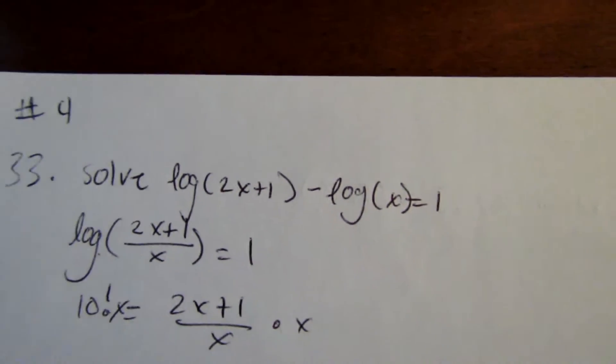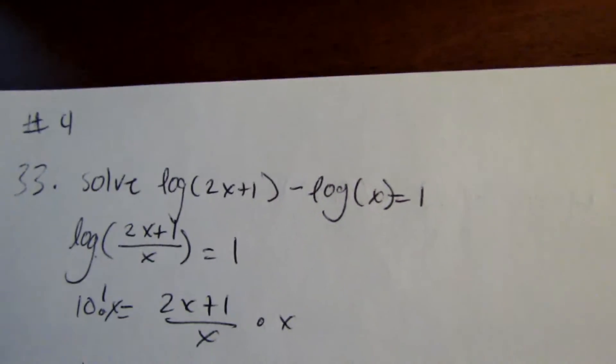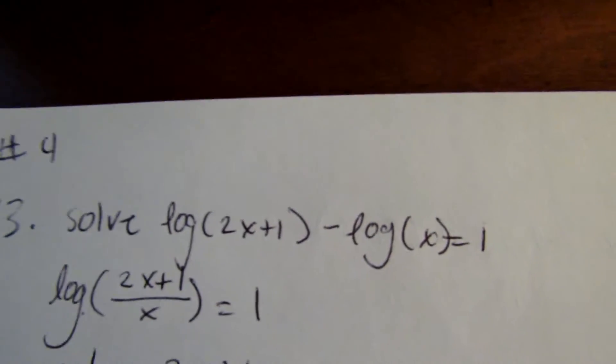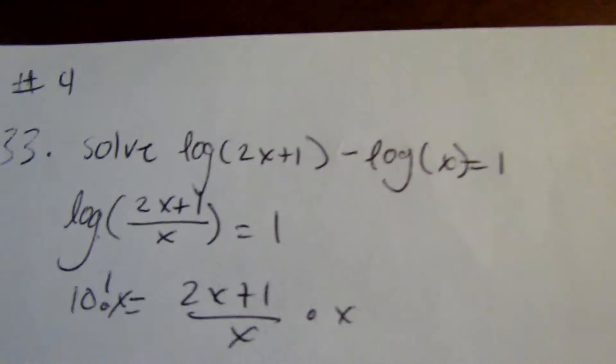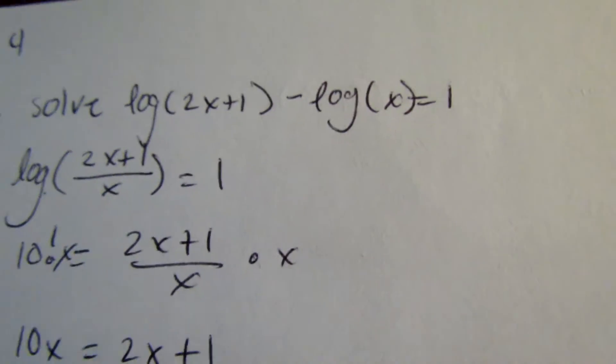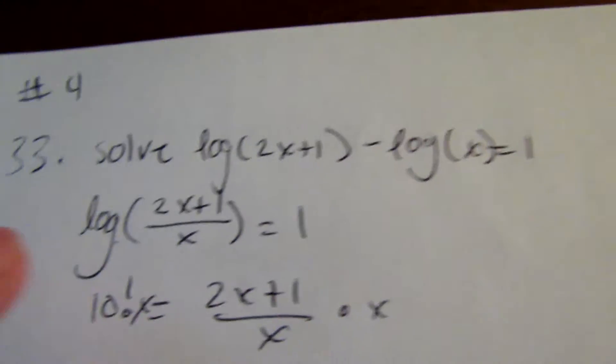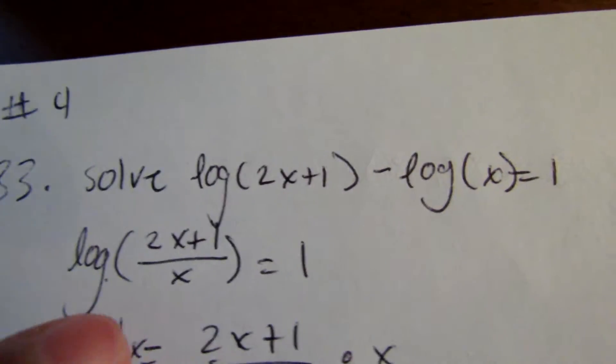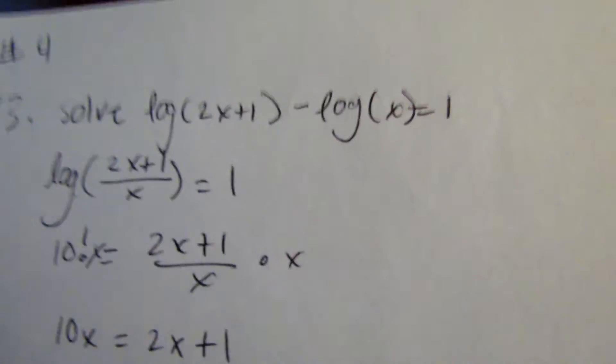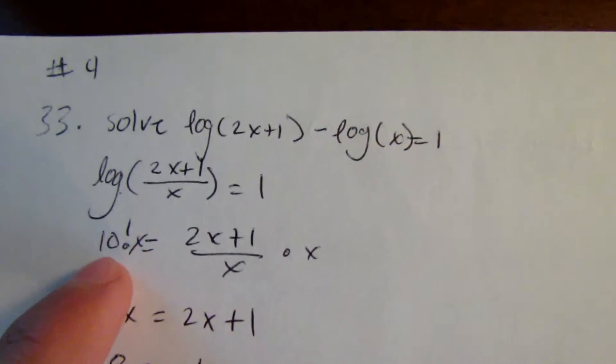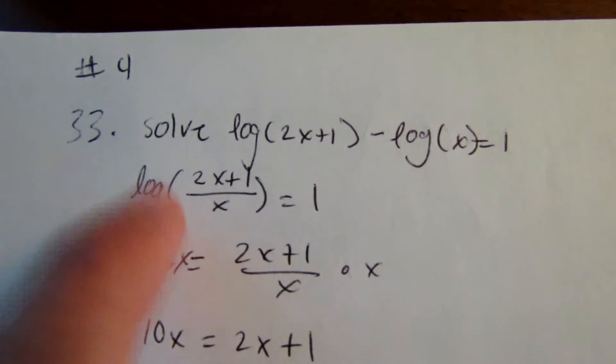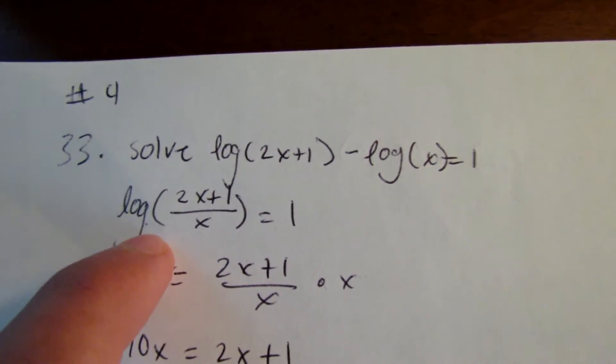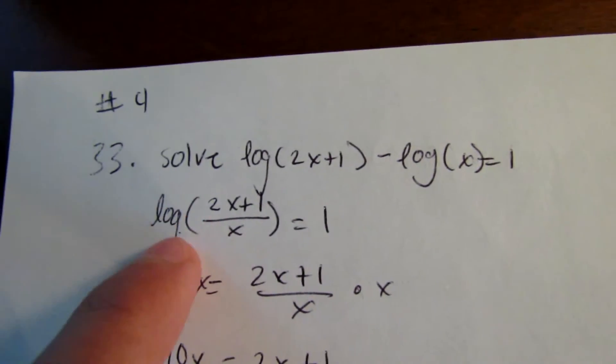First up, we want to condense this expression. If we remember that the minus sign means divide, we put in log of 2x plus 1 over x equals 1. And then we realize that there's a 10 there because that's another rule of logs.